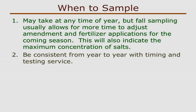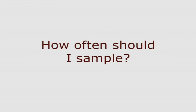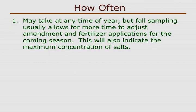Once you've addressed any problems, the important thing for repeated sampling is to be consistent from year to year, both with the time and the testing lab. I like to do soil samples once a year during the first couple years of a new planting. Mid-season tissue sampling is also very important to come in and fine-tune your recommendations, but that's another topic.